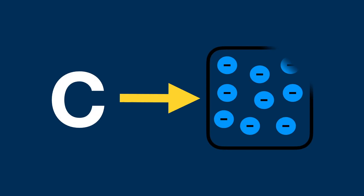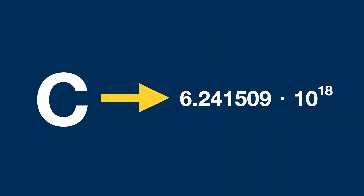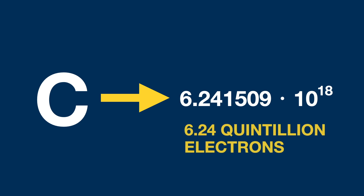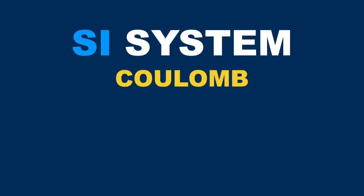Essentially, a coulomb is just a certain amount of these elementary charges — more specifically, around 6.241509 times 10 to the power of 18 electrons, or about 6.24 quintillion electrons. In the SI system, the coulomb is defined as the quantity of electricity carried in one second by a current of one ampere.